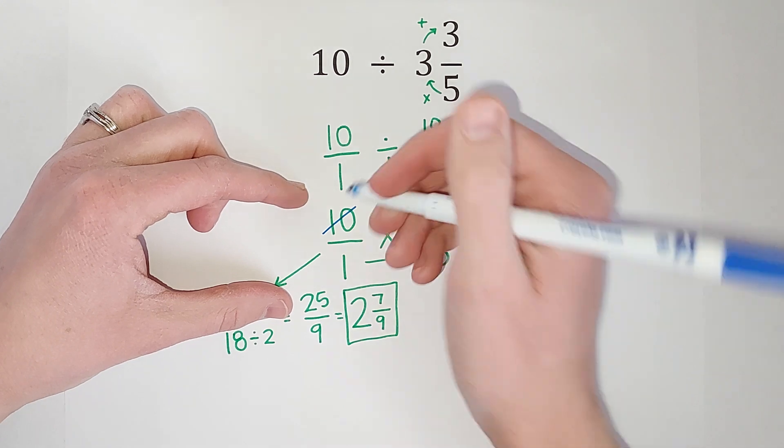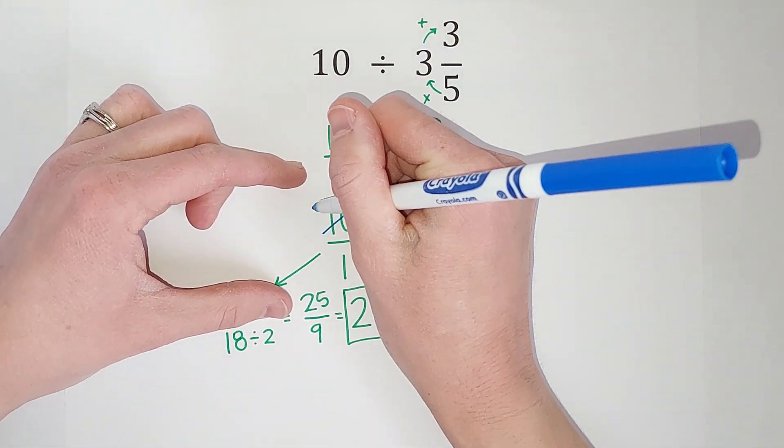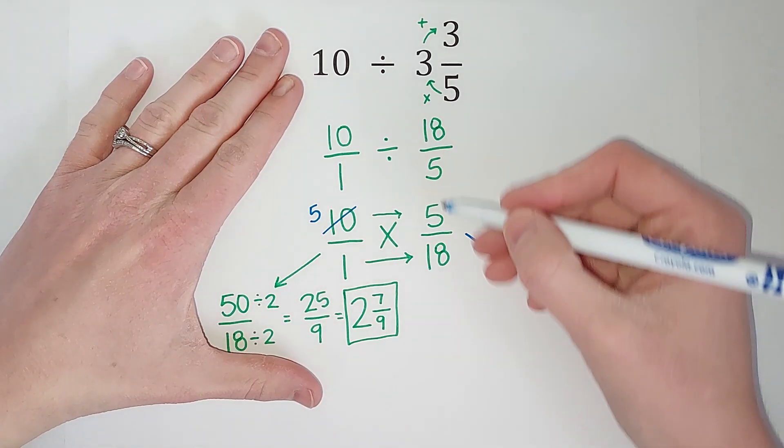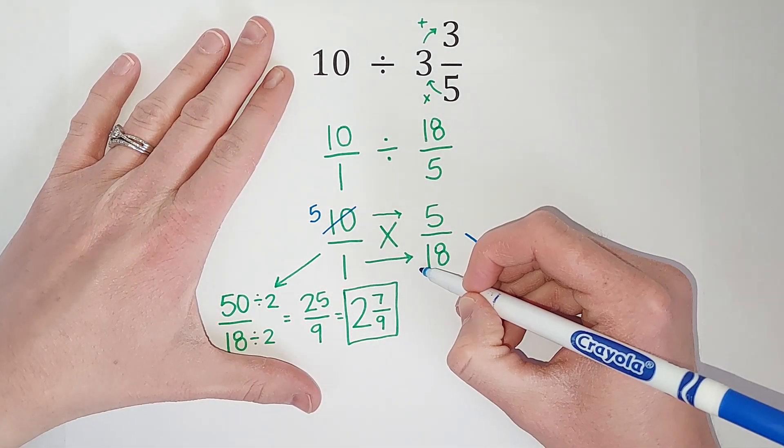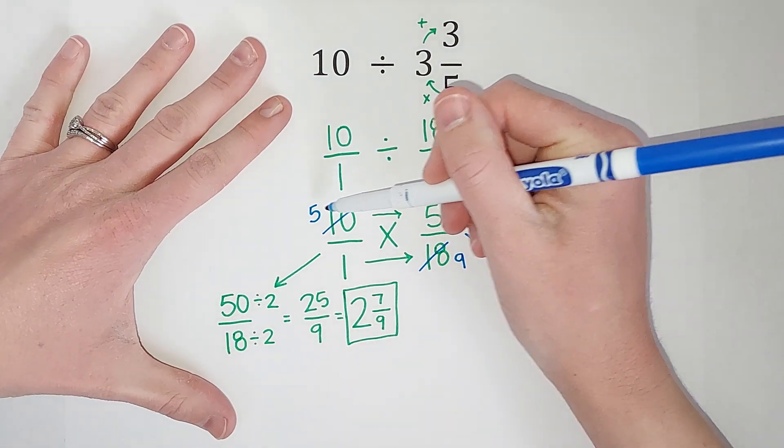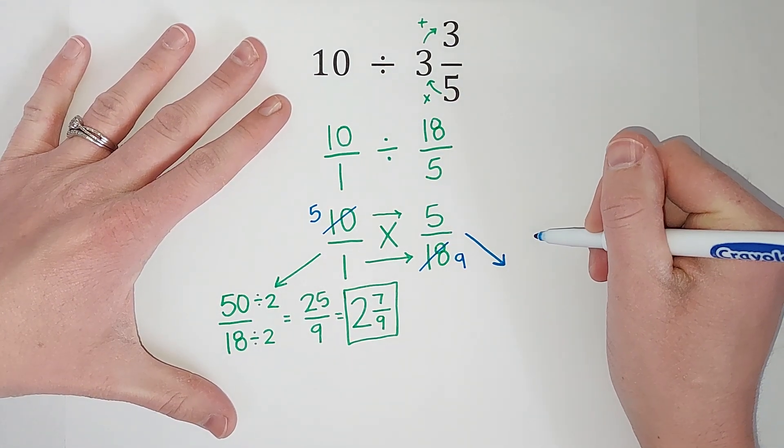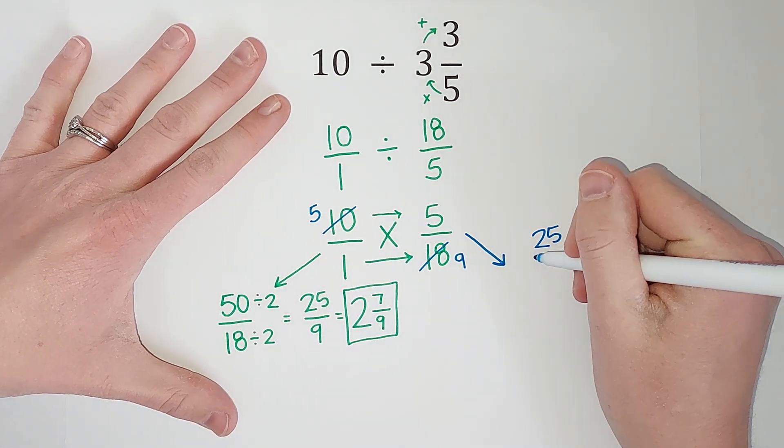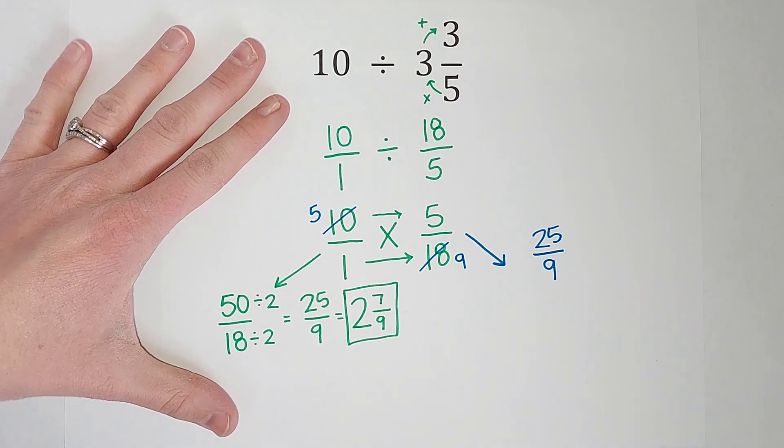So if I take 2 out of 10, I'm left with 5, because 10 divided by 2 is 5. And then if I take 2 out of 18, 18 divided by 2 gives me 9. So then we have 5 times 5 gives me 25, and 1 times 9 gives me 9.